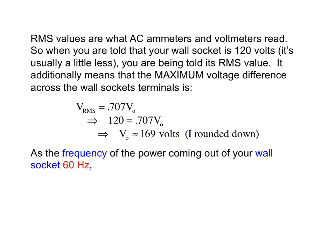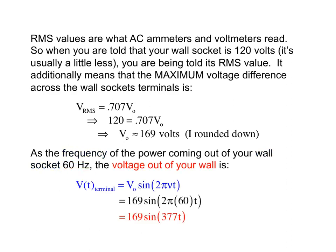Given that you know the frequency at your wall socket is 60 cycles per second, you can plug into the sine wave function, multiply 2π times 60 to come out with 377, and find that the voltage function for your wall socket is 169 sin(377t).